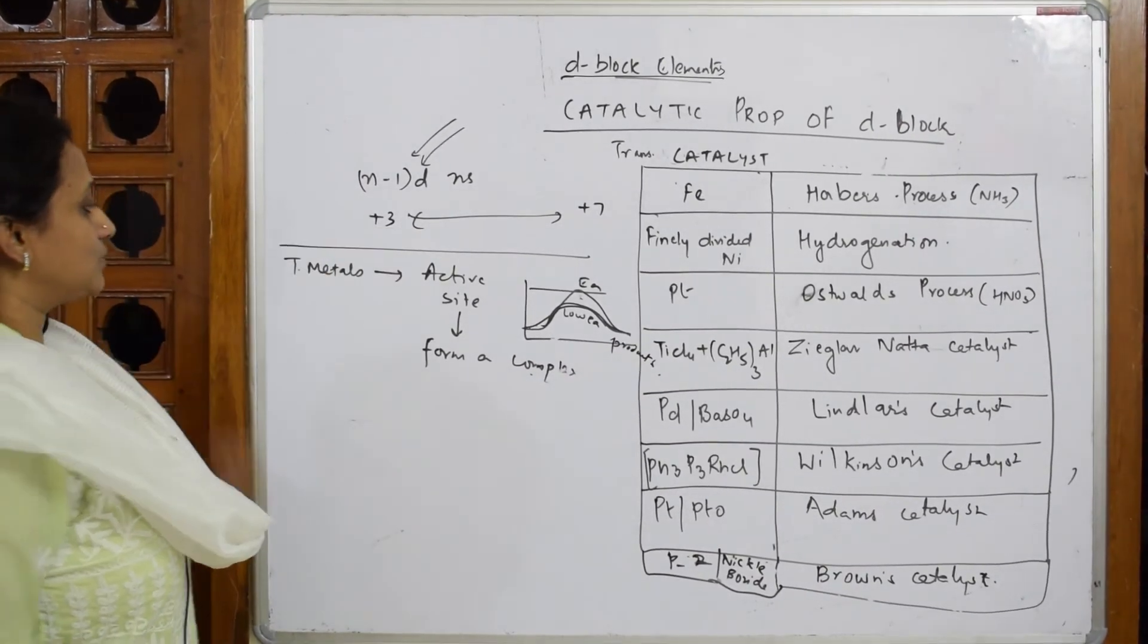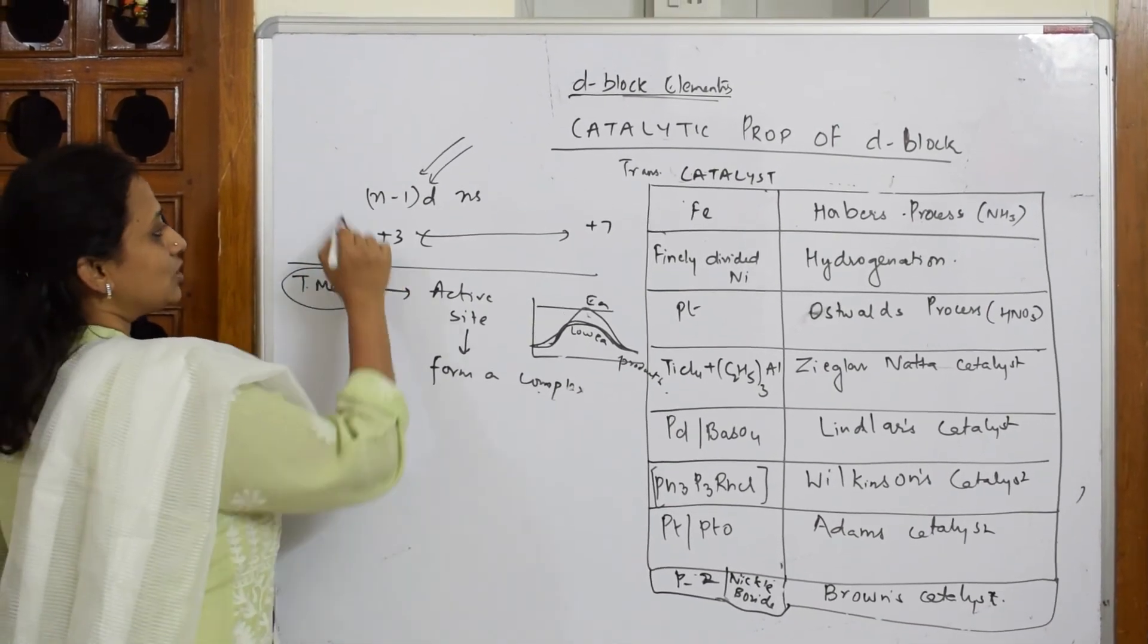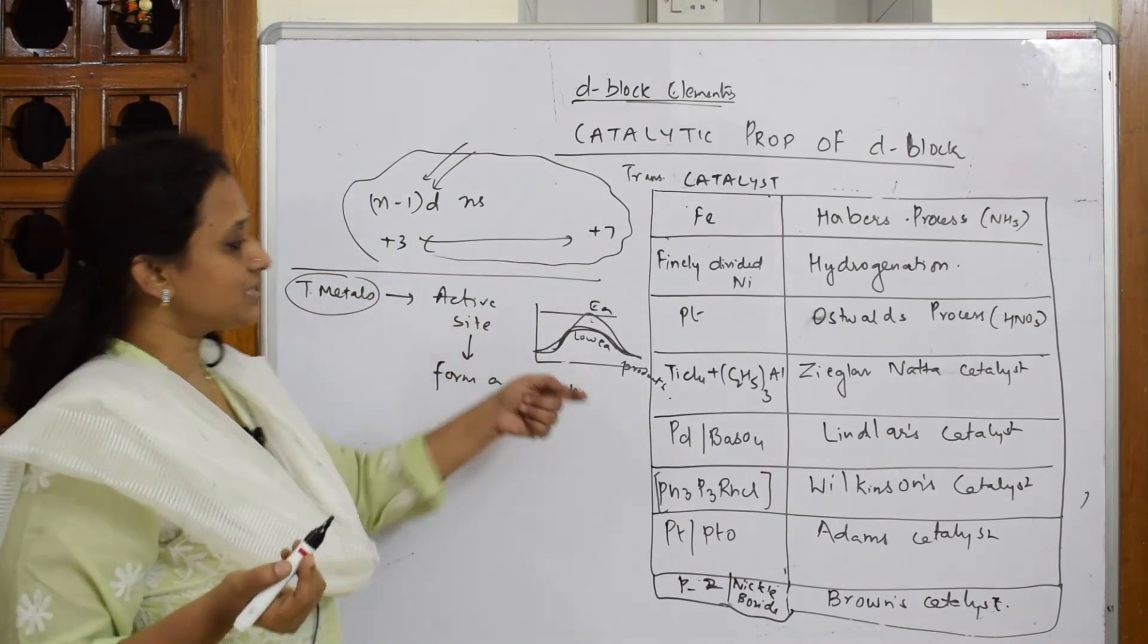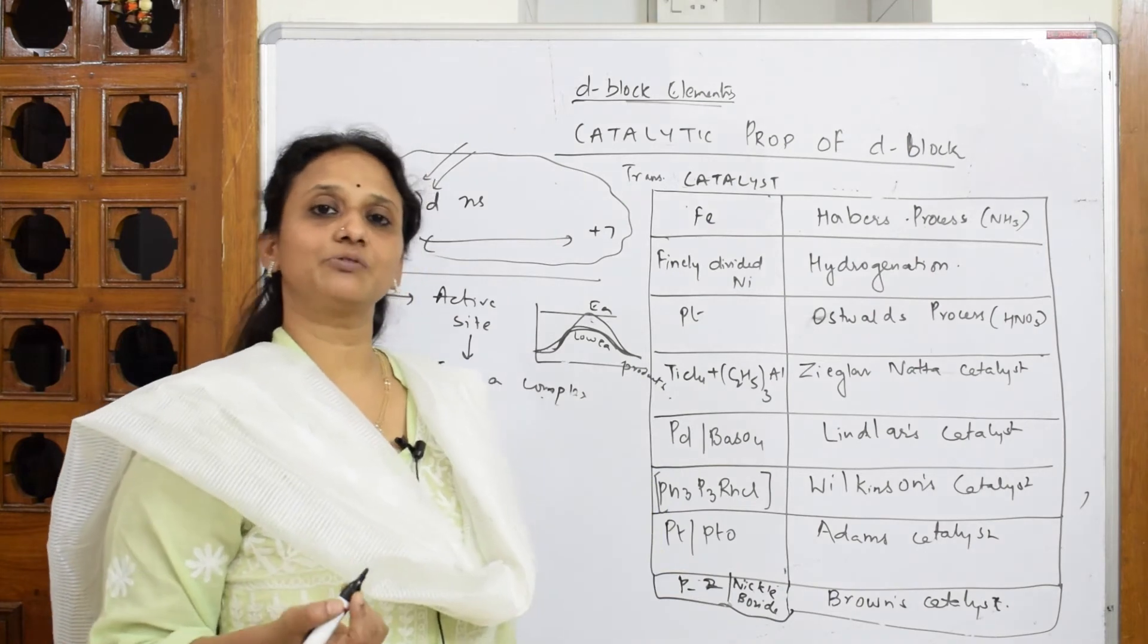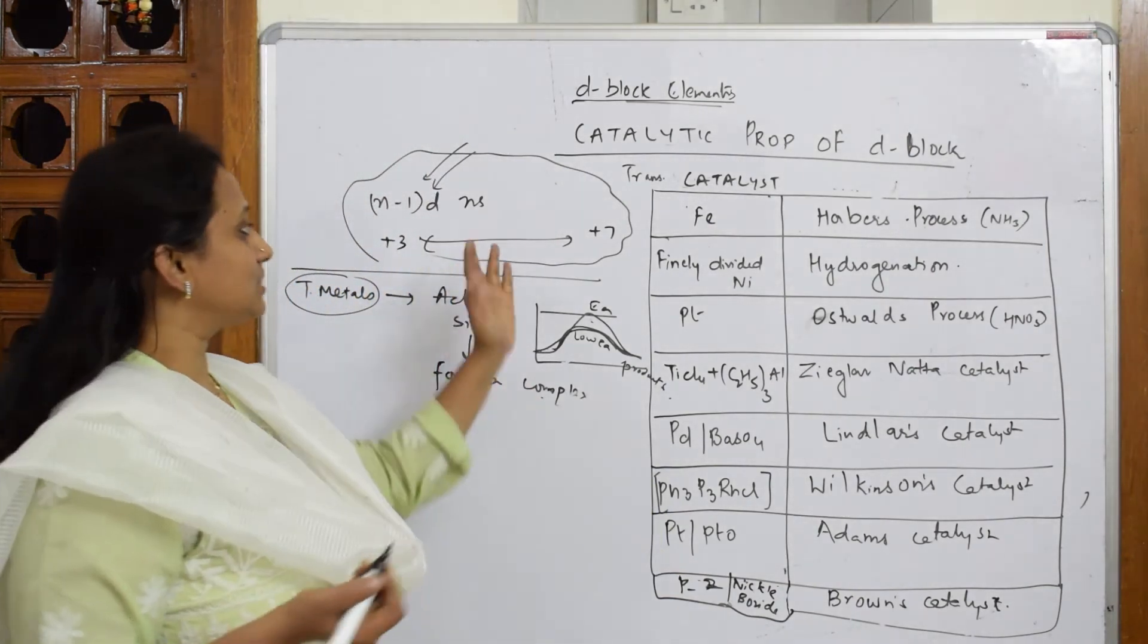What is this concept now? It's going to form an active site. It has many variable oxidation states. That means it can fit any number of atoms into that particular active site, accept that number of atoms and finally form an active catalyst. That is what is the concept.